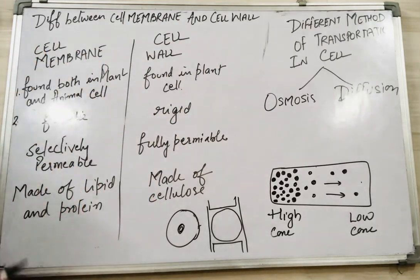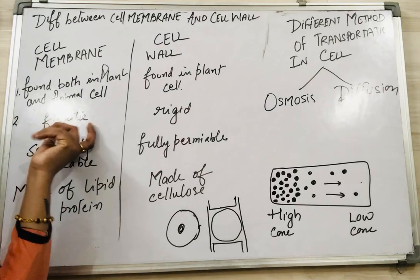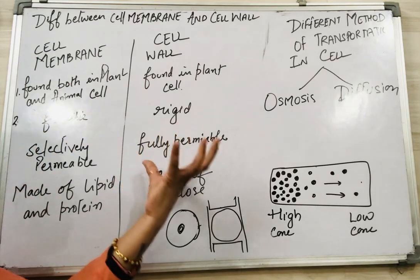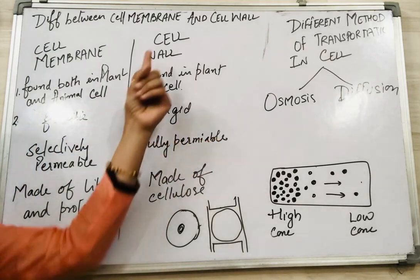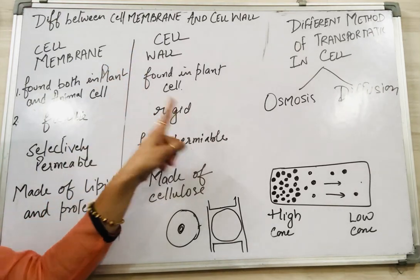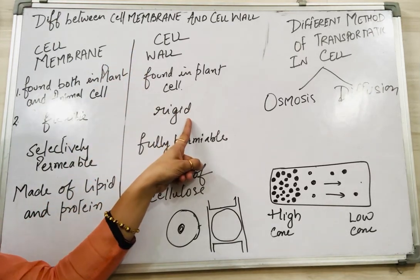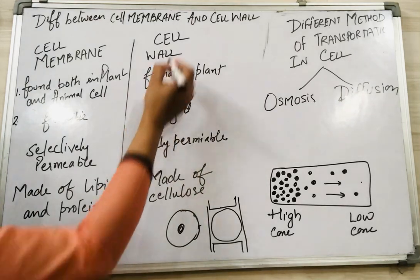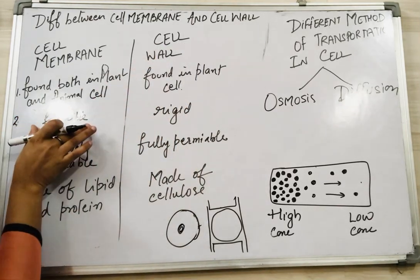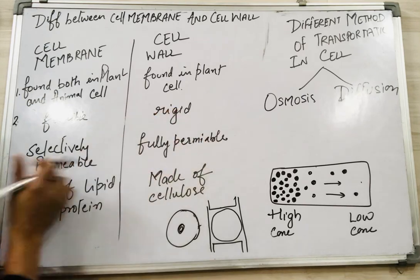The nature of the cell membrane is very flexible — it can be compressed easily or can stretch. Whereas in the case of the cell wall, it is very rigid, that is why it gives a fixed shape to the cell. So the second point is: cell membrane is flexible and the cell wall is rigid.